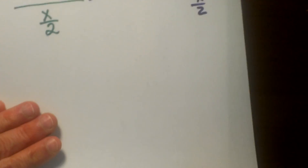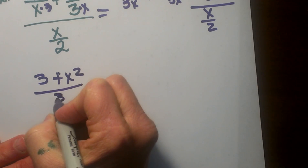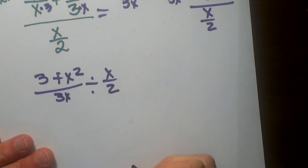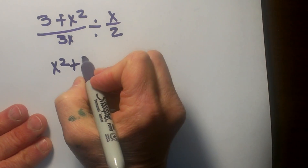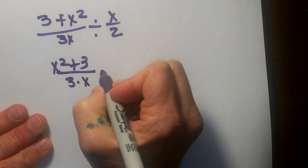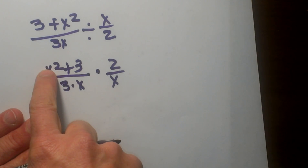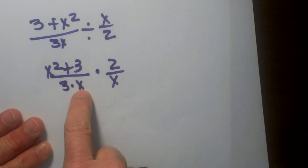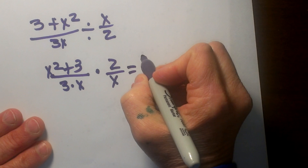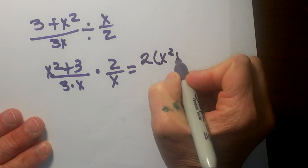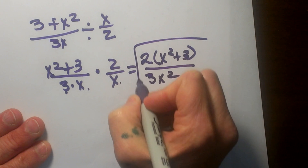Now I am going to take it from a double stack to a long problem: three plus x squared over three x divided by x over two, and then I am going to keep it, change it, and flip it. I am just going to switch the order of these — it is just rewriting it. That becomes three times x times two over x. Now I need to see if anything will cancel. I have x squared plus three in the top and two and three x and then another x. I do not have anything common top and bottom, so I cannot cancel anything. So I write my coefficient two first, then times x squared plus three, and in the denominator I have three times x times x, so I have three x squared. That is my final answer.